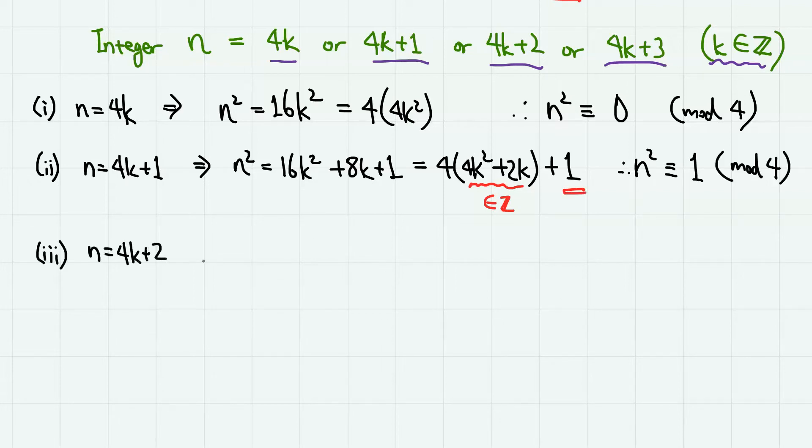Next, when n = 4k+2, then n² = 16k² + 16k + 4. So we have 4 times (4k² + 4k + 1). So in this case, n² is divisible by 4.